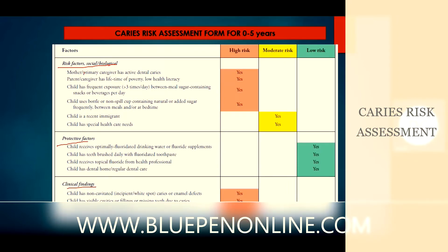Under risk factors, we assess whether the mother or primary caregiver has active dental KDIS, whether there is a lifetime of poverty or low health literacy, frequent between-meal sugar exposure, and whether the child uses a bottle or non-spill cup containing natural or added sugar. These come under high risk. Moderate risk includes if the child is a recent immigrant or has special health care needs. Under protective factors: receiving fluoridated drinking water, fluoride supplements, brushing daily with fluoridated toothpaste, and obtaining topical fluoride from a health professional or having a dental home. Clinical findings indicating high risk include non-cavitated caries or enamel defects, visible cavities, fillings, missing teeth due to caries, or visible plaque on teeth.